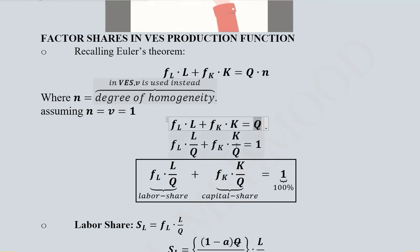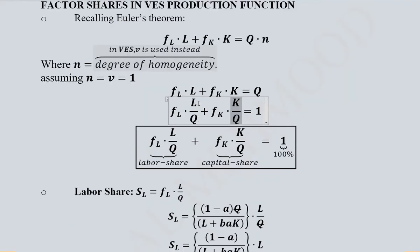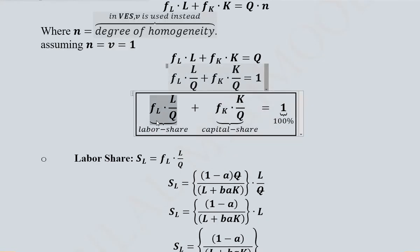When Q is shifted to the other side, it gives us Q in the denominator of both terms. This is the labor share because it shows the marginal product multiplied with labor divided by total output. In the same way, this term is the capital share, and their sum should equal 1, showing 100%.